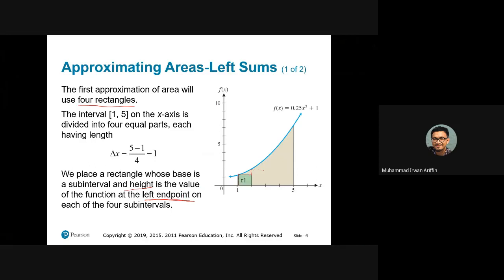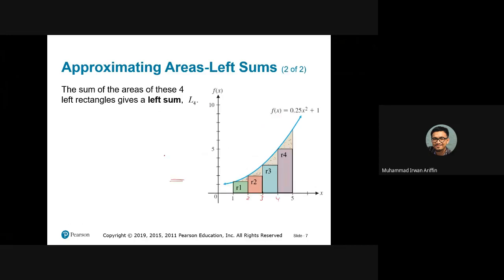So this is the first rectangle — the height of this rectangle will be at the left endpoint. The second rectangle will be from two to three, with the height at the left endpoint. And so we have rectangle two, rectangle three, and rectangle four. We can find the sum of R1 to R4 by taking the width, which is one, and multiplying by the height. The height is simply F of one for the first rectangle. We substitute the value one into the original function and multiply by the width. For rectangle two, we substitute the value two.